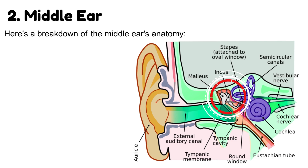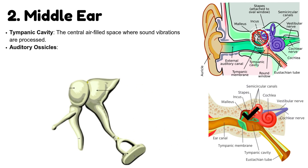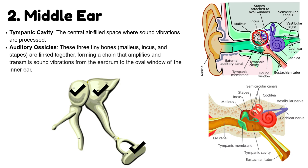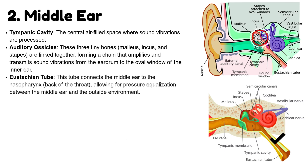Here's a breakdown of the middle ear's anatomy. Tympanic cavity — the central air-filled space where sound vibrations are processed. Auditory ossicles — these three tiny bones, malleus, incus, and stapes, are linked together forming a chain that amplifies and transmits sound vibrations from the eardrum to the oval window of the inner ear. Eustachian tube — this tube connects the middle ear to the nasopharynx, the back of the throat, allowing for pressure equalization between the middle ear and the outside environment.